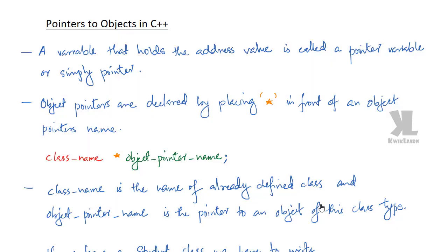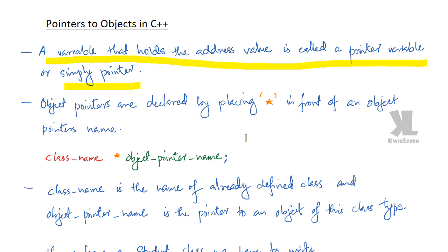Hi, this is Rishin. In this session we will discuss pointers to objects in C++. A pointer is a variable that holds an address value. A variable that holds the address value is called a pointer variable, or simply a pointer.